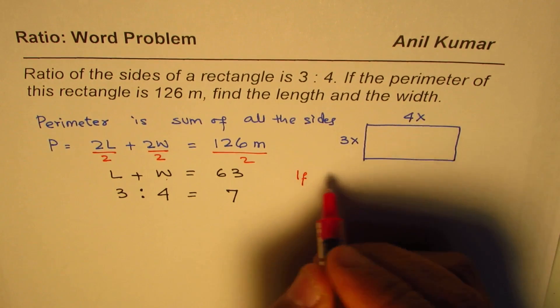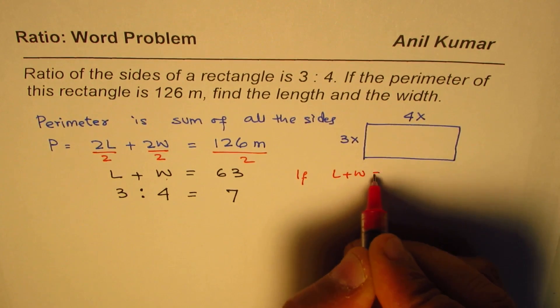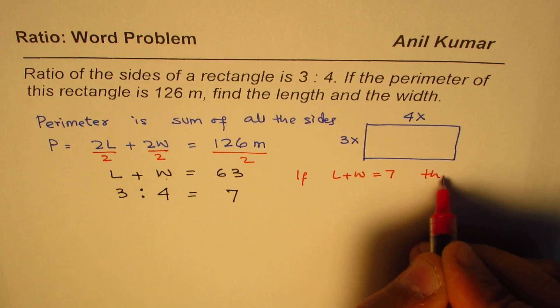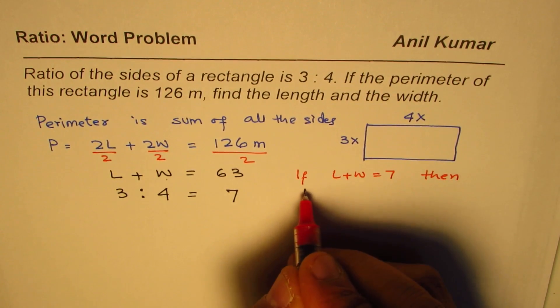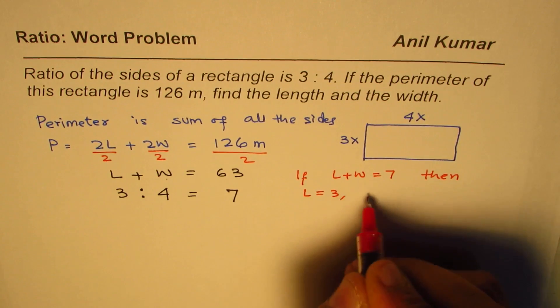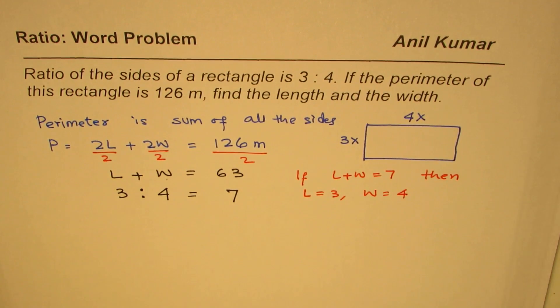If length plus width equals to 7, then length equals to 3, width equals to 4, correct? That is what we are trying to say.